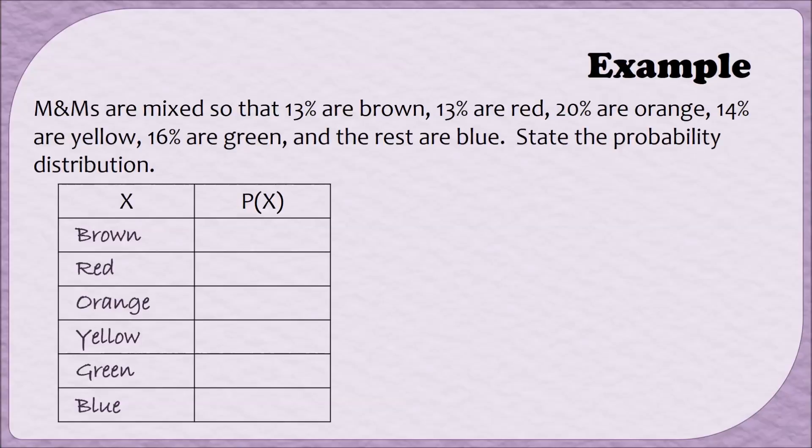Then we can use the percentages that we were given to help us find the probabilities. Since 13% of the M&Ms are brown, that means that the probability of finding a brown M&M is 0.13. Since 13% of the M&Ms are red, the probability that an M&M is red is also 0.13. And we can continue down the list. Since 20% of the M&Ms are orange, the probability of orange is 0.20. And since 14% are yellow, the probability of yellow is 0.14. And since 16% are green, the probability of a green M&M is 0.16.